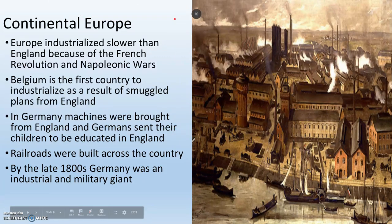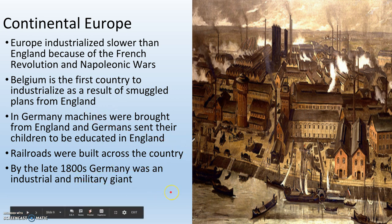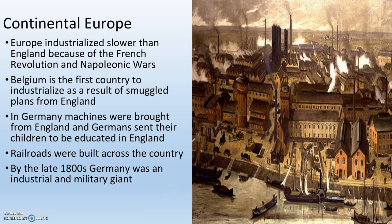Europe does industrialize, but slower than England because of the French Revolution and Napoleonic Wars — they're still trying to rebuild. Belgium is actually the first country to industrialize; it's really close to England, just across the English Channel, and had been under English control for a while. Similar to the United States, they've got smuggled plans from England they're building off of. In Germany, machines are actually brought from England, and Germans send their children to be educated in England to start their own industrial revolution, often called the Second Industrial Revolution. By the late 1800s, Germany is considered an industrial and military giant — it's got more metal and more land than England.